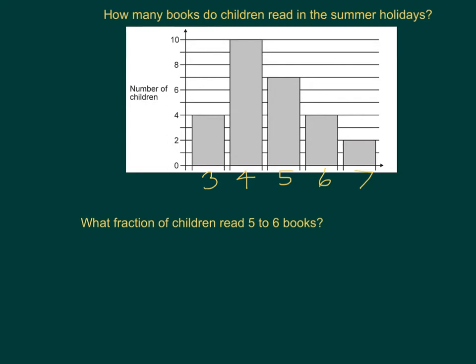When looking at this type of question, it's good to get the first thing as your whole — how many children were even asked this question? So I'm looking at my first bar: that was four children, this was ten, this was seven, this was four and this was two. So if I add them all up, I'll get twenty-seven. So my whole is twenty-seven. Now the two areas I'm looking at are between five and six, so this is my seven and four, which add together to give me eleven. So my fraction is eleven out of twenty-seven. I can't simplify this fraction, so it remains just as eleven out of twenty-seven.